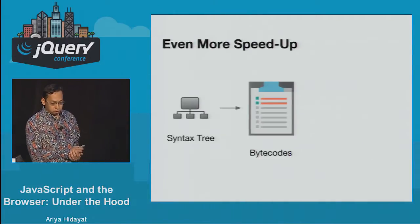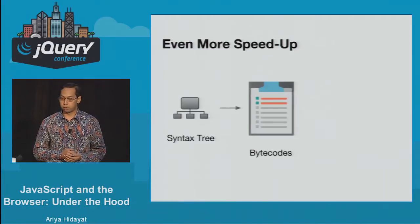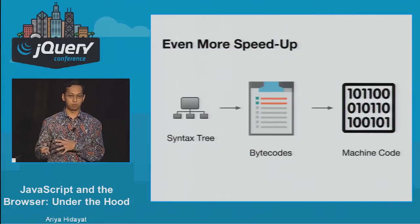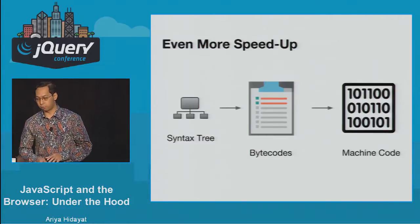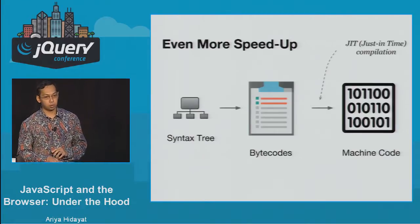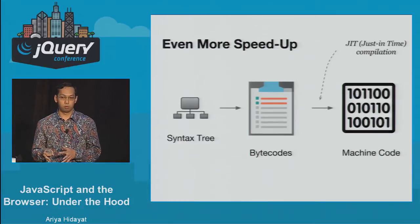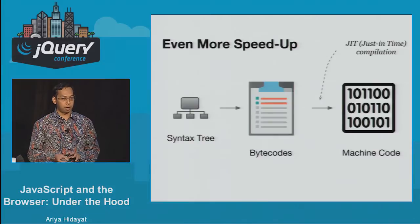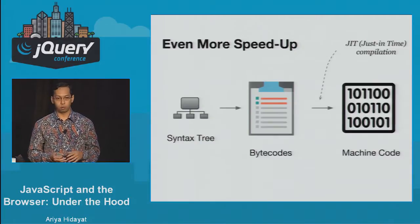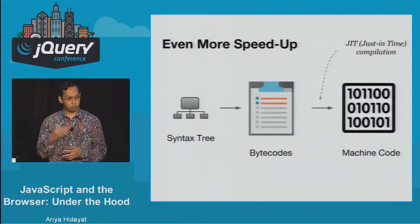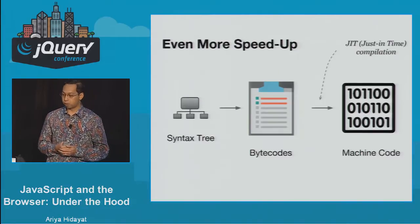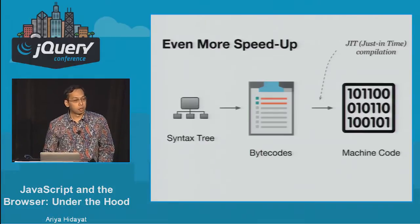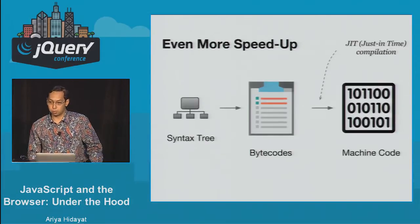An even greater speedup is to not execute bytecodes but instead execute machine code directly. This is very popular in modern JavaScript optimization. Instead of walking the syntax tree, we run the bytecode and after a certain time that bytecode is transformed into machine code so the CPU can execute it directly. This step is called just-in-time compilation — 'just-in-time' because those bytecodes are turned into machine code only when really needed. If a button handler runs once to submit a form, there's no need to compile it into machine code. However, if certain loops need to run really fast, a modern JavaScript engine will recognize that the loop is 'hot' and turn it into machine code so the CPU can execute it directly.